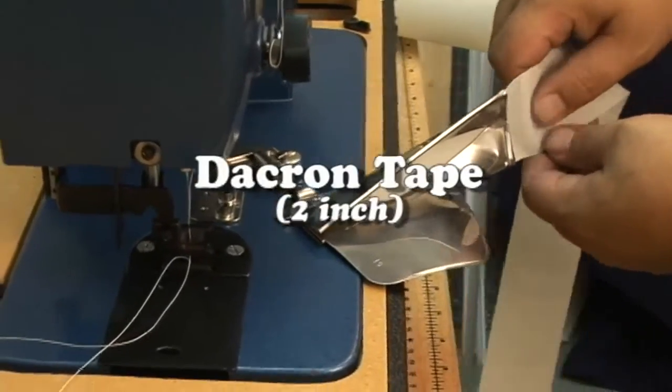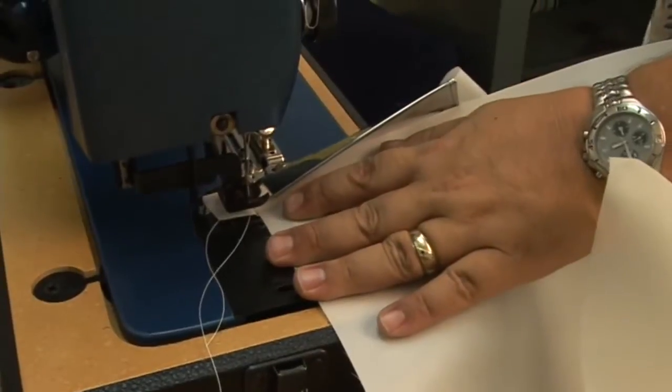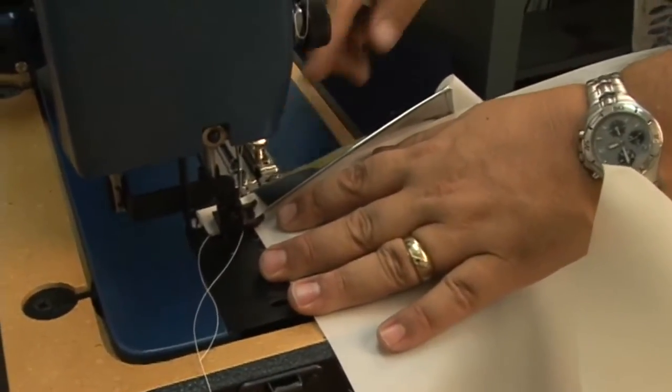There are many customers with sails that have to do hems along the leech and sometimes other places on the sail. You can use the 2 inch binder to sew 2 inch Dacron tapes along the edge of your sail.